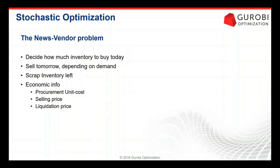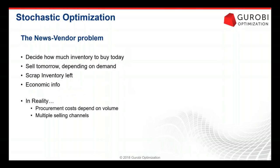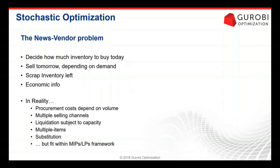This is a well-known problem — if you've done an MBA, this is what they show, and it has a closed-form solution. But in reality there are many more things going on: procurement costs that depend on volume, multiple selling channels with different prices, liquidation subject to capacity, multi-items sharing storage capacity, and item substitution. The beauty of using optimization rather than just a closed form is that you can embed all those complications into your MIP or LP framework.